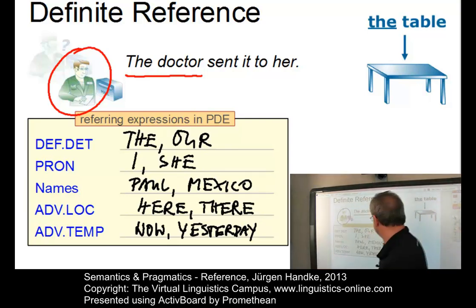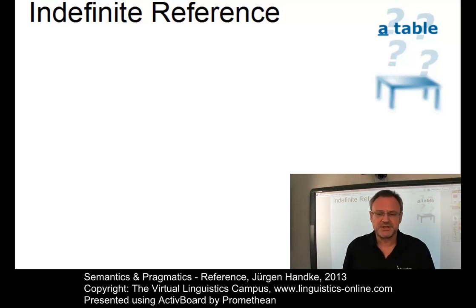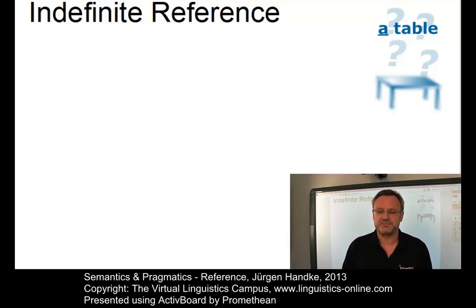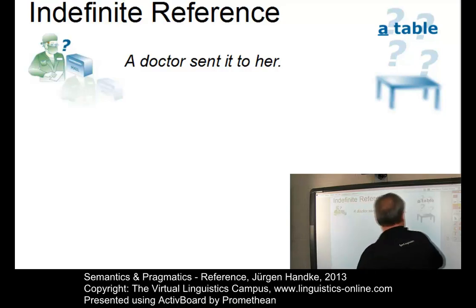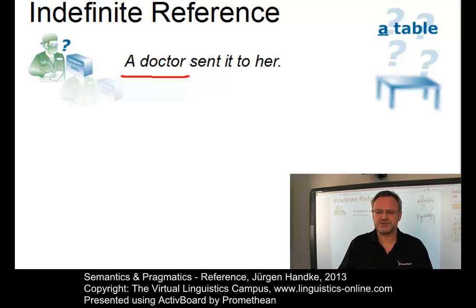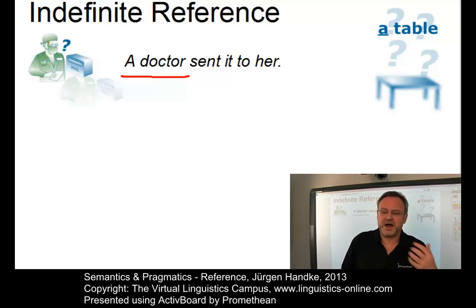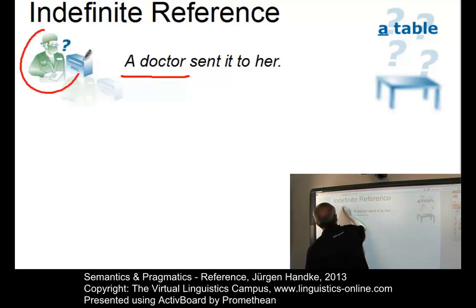In instances of indefinite reference, the success of the act of reference does not depend on the individual features of the referent — only the features of the class to which the referent belongs are relevant. For example, with 'A doctor sent it to her,' the noun phrase 'a doctor' is not necessarily identifiable by either speaker or hearer. The identity of the referent is not relevant to the message; the hearer does not need to know which specific doctor is involved.